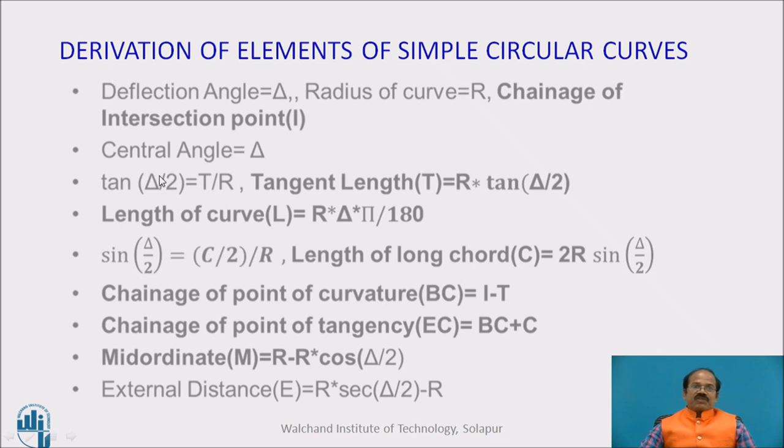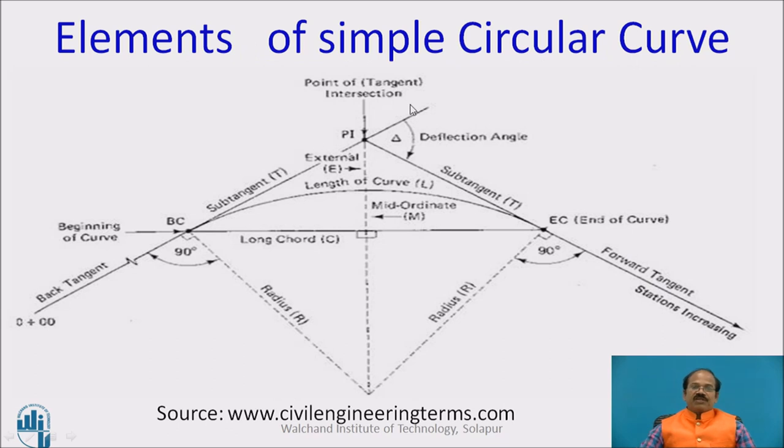The first component is the central angle delta. As shown here, this angle will be delta. Because this is an isosceles triangle PI-BC-EC, these two angles will be equal angles. With the geometry of this triangle having the summation equal to 180 degrees, we can easily say this is delta, so this will be 180 minus delta. 180 minus delta plus this angle plus this angle equals 180 degrees. Each of these angles works out to be delta/2, half the deflection angle.